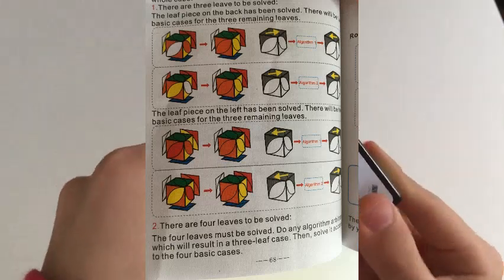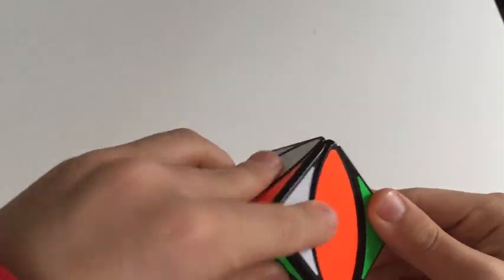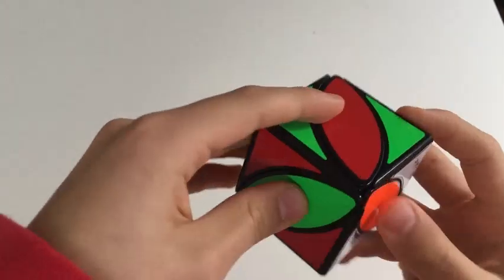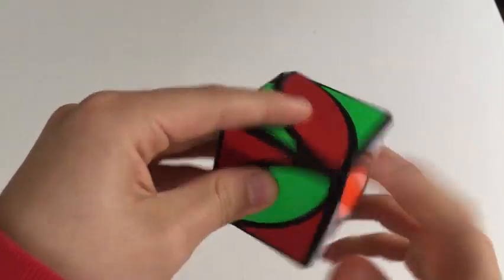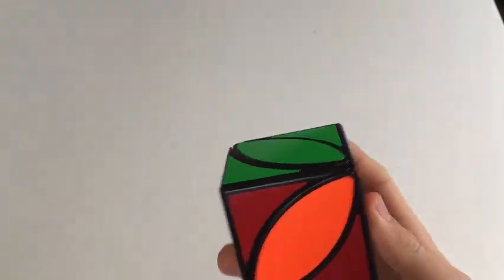Now I'm going to solve the green side with a similar concept, like that. So I've got something that looks like that. And I'm going to do algorithm 1 because it's on the left side. And there we are.